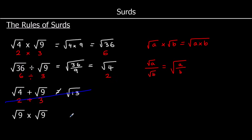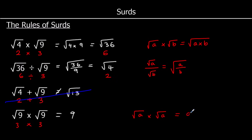And root 9 times root 9, or root 9 squared: squaring and square rooting are the opposite of each other. So if I've got a square root and I square it, I end up with what I started with. Root 9 times root 9 is equal to 9. Root 9 is 3 and 3 times 3 makes 9. Or using the first rule: root 9 times root 9 equals root of 9 times 9, which is root 81, and root 81 is 9. So the rule is: root a times root a equals a.